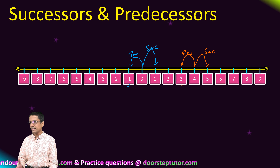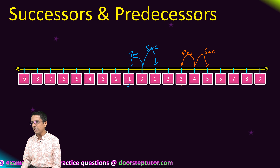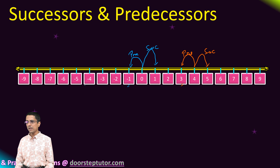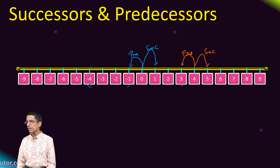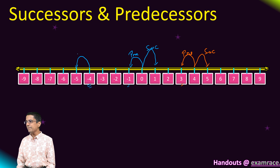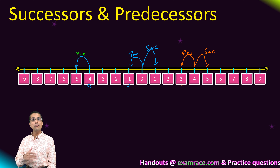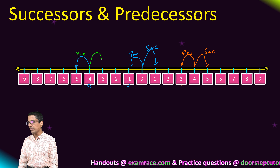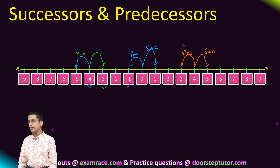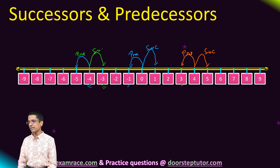Now let's consider a negative number — for instance, let's take minus 4. If I go one number to the left of minus 4, I come to minus 5, which is the predecessor. If I go one number to the right of minus 4, I come to minus 3, which is the successor.